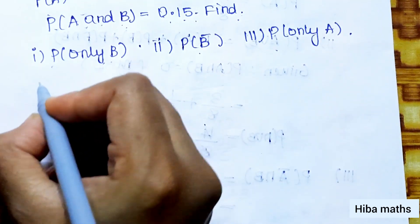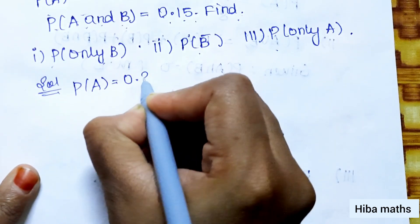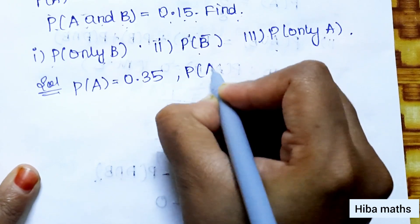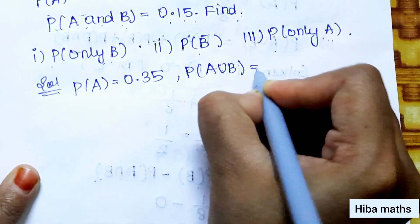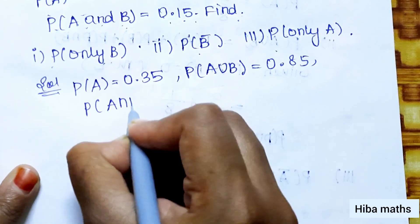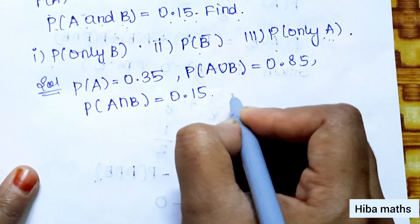In the solution, what do we need to get? First, P(A) is 0.35, P(A union B) is 0.85, and P(A intersection B) is 0.15.